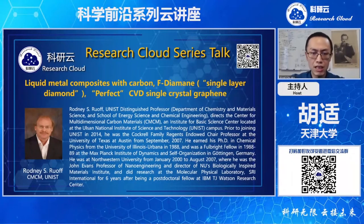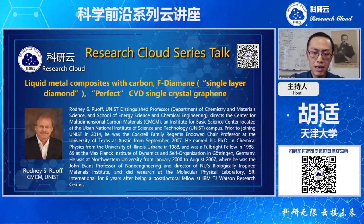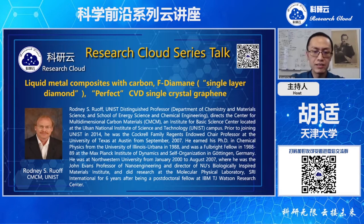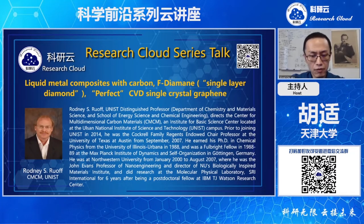Prior to joining UNIST in 2014, he was a Cochrea Family Regents Endowed Chair Professor at the University of Texas at Austin from September 2007. He earned his PhD in Chemical Physics from the University of Illinois, Urbana-Champaign in 1988 and was a Fulbright Fellow in 1988-89 at the Max Planck Institute of Dynamics and Self-Organization in Göttingen, Germany. He was at Northwestern University from January 2000 to August 2007, where he was the John Evans Professor of Nano Engineering and Director of the Biologically Inspired Materials Institute.